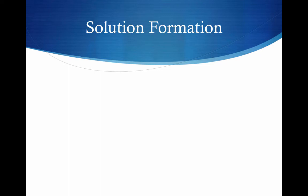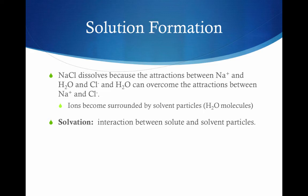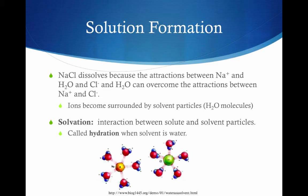So why do solutions form? Let's focus on ionic solutes — take NaCl for example. NaCl dissolves in water because the attractions between the charged Na+ and Cl- ions and the polar water molecules are actually stronger than the attractions between the ions themselves. Therefore, water molecules are able to surround each individual ion and separate it from the crystal. This process is called solvation — the interaction between the solute and the solvent particles. If the solvent is water, this process is specifically called hydration. Here we see the positive Na+ ion being surrounded by the negative ends of the polar water molecules, and the negative chloride ion being surrounded by the positive ends of the water molecules.